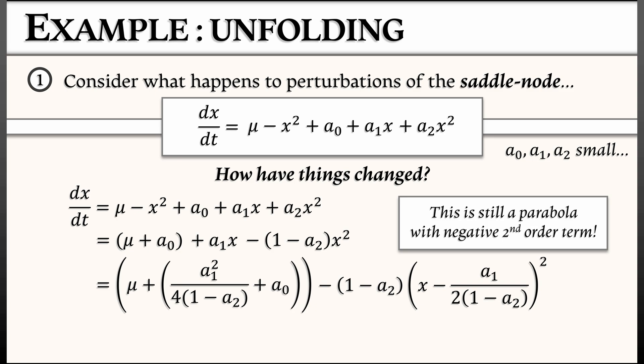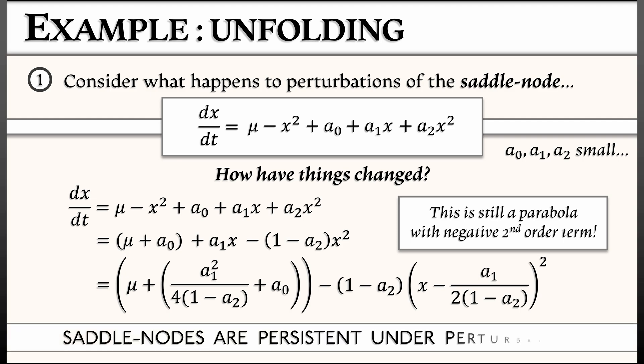What matters is that we perturbed a saddle node and we got a saddle node. Saddle nodes are persistent under perturbation. They are robust. That is one reason why you see saddle nodes all over the place in physical systems. You can take that pure normal form, bump it, you still get a saddle node.